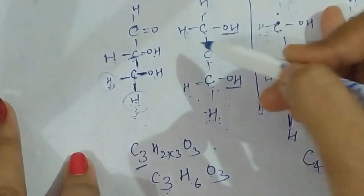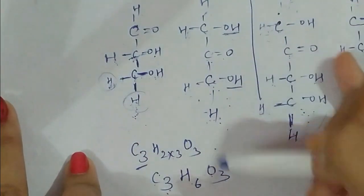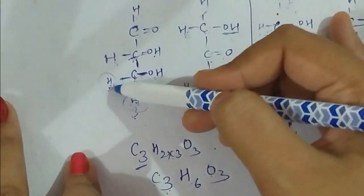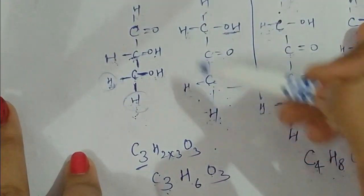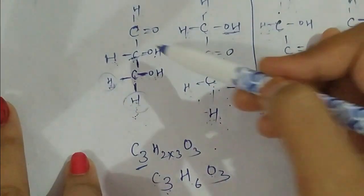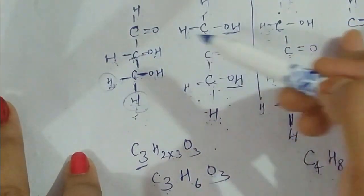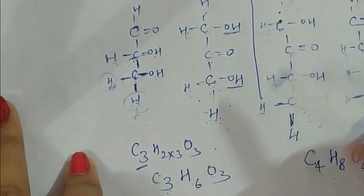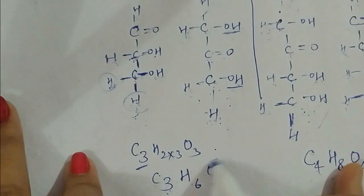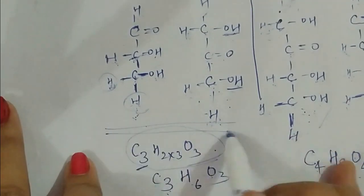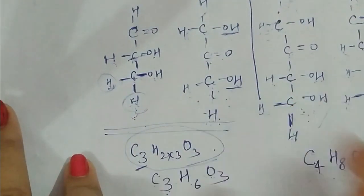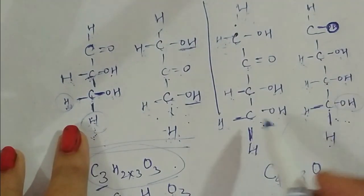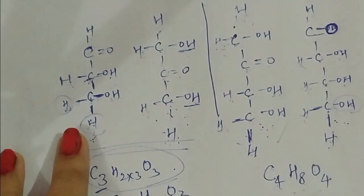Let's verify with the molecular formula. As this is a triose, the formula is C3(H2O)3 = C3H6O3. Checking the aldotriose structure: three carbon atoms, six hydrogen atoms, and three oxygen atoms — confirmed. Checking the ketotriose: three carbons, six hydrogens, three oxygens — also confirmed. So the formula is the same for a triose whether aldehyde or ketone is present. Similarly, both tetrose molecules have the formula C4H8O4.